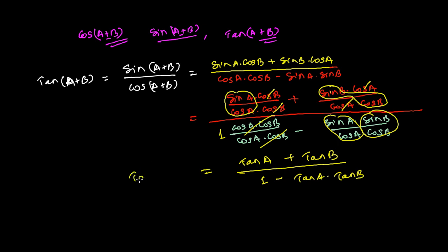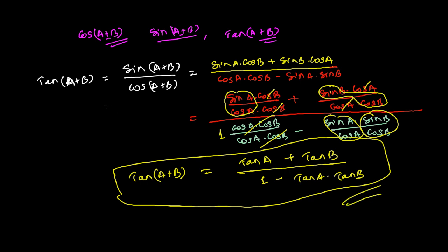So our formula for the tan A plus B is going to be tan A plus tan B over 1 minus tan A times tan B. This is our formula for the tan A plus B.